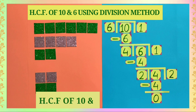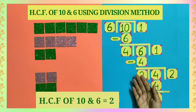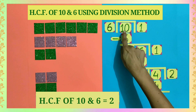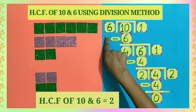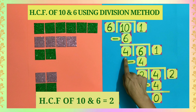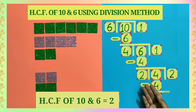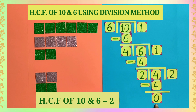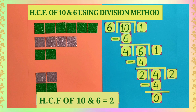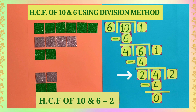So dear students, in division method, we take the larger number as a dividend and the smaller number as divisor. Then the remainder is taken as new divisor and the last divisor is taken as dividend. The process is repeated till we get the remainder 0, and the last divisor is the highest common factor of the given numbers.